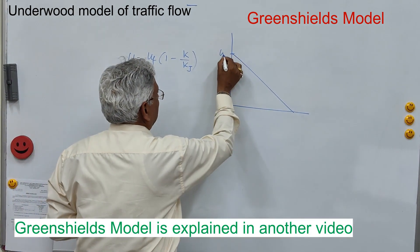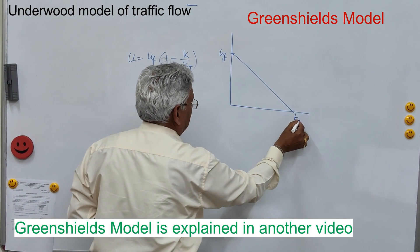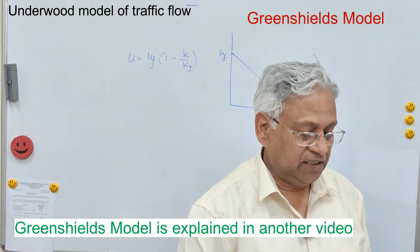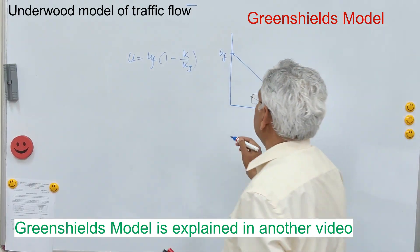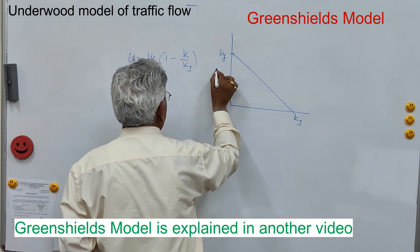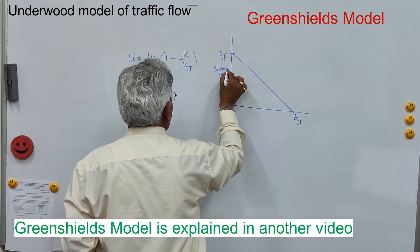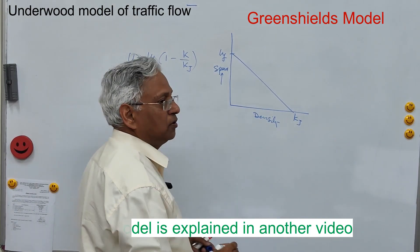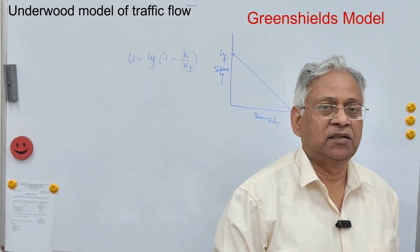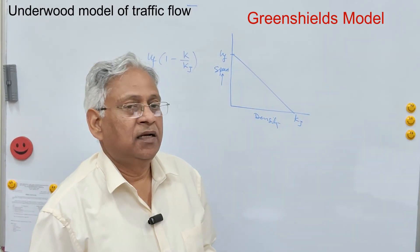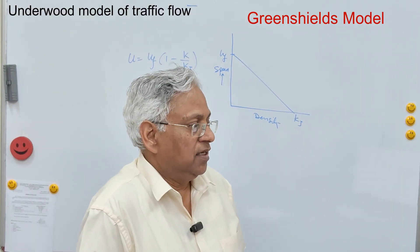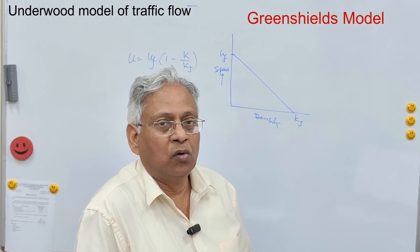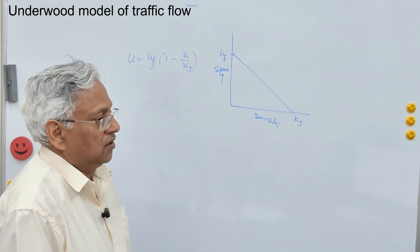This is uf and this is kj. Between these two limits, the speed changes with the density linearly — this is the stream speed and this is the density. Now this model is very simple to apply, but it has certain limitations because it assumes a linear relationship between speed and density, which does not hold true across all traffic conditions.